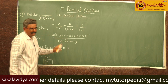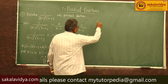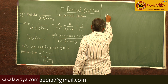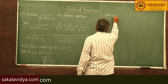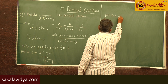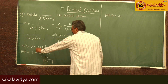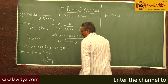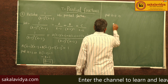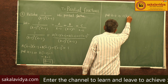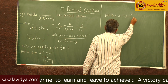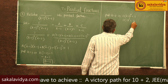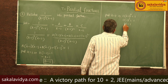Now put x equal to 2. The (x minus 2) terms become 0, so the A and B terms become 0. C times (2 minus 1) squared equals 1, so C times 1 squared equals 1, therefore C equals 1.